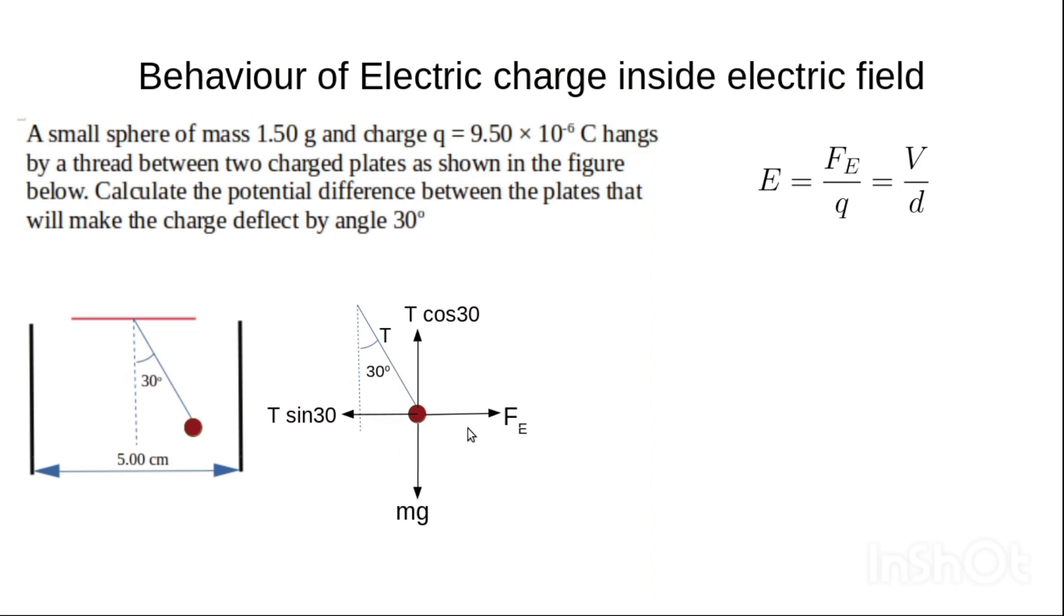If we look at the forces along the x-axis, we have T sin 30 equals Fe. We know that Fe = Eq. Since we are not interested in E, we are interested in the potential between these two charged plates, we can replace E with V/d. So we have T sin 30 = Vq/d.